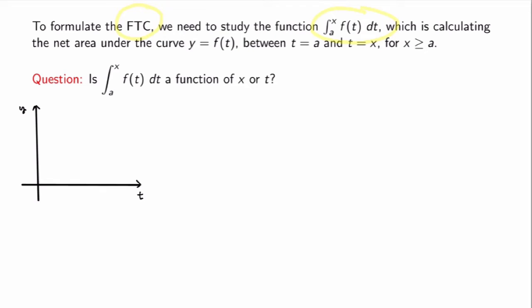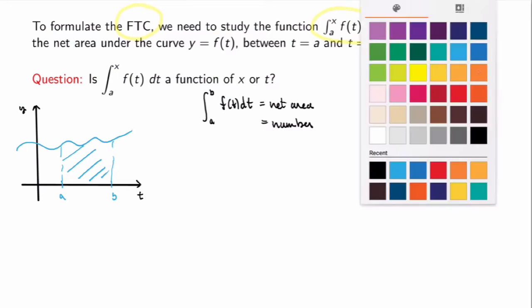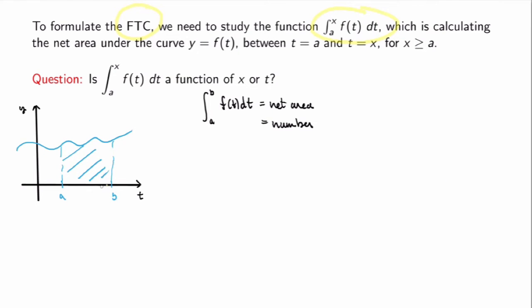Let's start by trying to understand what this function is calculating. The first question is: is this function a function of x or t? If we fix x, the integral from a to b of f(t) dt is calculating the net area under the curve — it's really just a number. But what I want to do is let the upper limit of integration vary. So instead of fixing it to be b, I'll let it vary and give it a name called x. For different values of x, I'll be calculating different net areas. So this expression is a function of x.